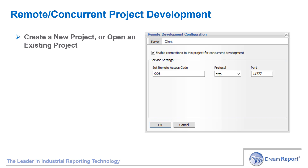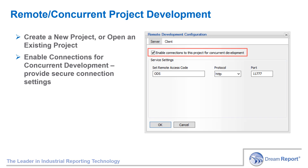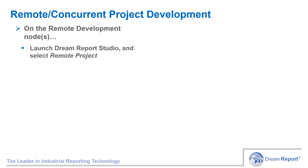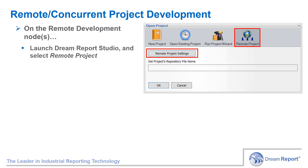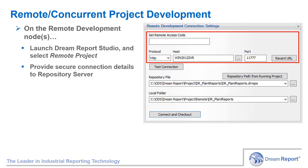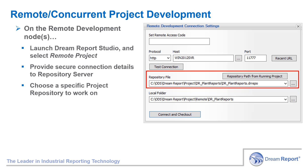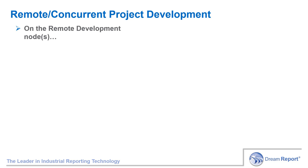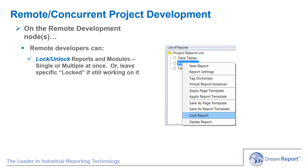For remote or concurrent project development, you start off by creating a new project, convert a legacy project, or open an existing project as you've always done in DreamReport Studio. Then simply click on the option to enable Concurrent Development and specify the secure connection parameters that remote users will need to supply when initially connecting. The project repository file will then be created for use with concurrent or remote development. On the remote development nodes, a user starts DreamReport Studio and if connecting to a remote project repository for the first time, enters the secure connection settings required by the repository node. The user selects the repository file on that server — multiple projects might be available to work on — or simply selects the current running project, and then specifies the path for the local working copy of the project. At this point, remote developers can lock one or more project modules and/or reports to work on, to prevent any other users editing those same reports, and then unlock them when done or leave locked if necessary.